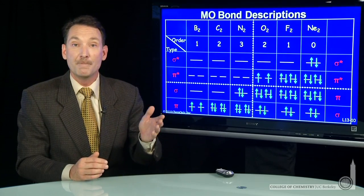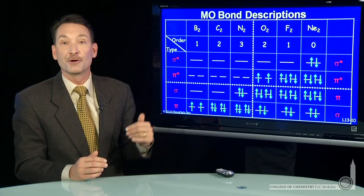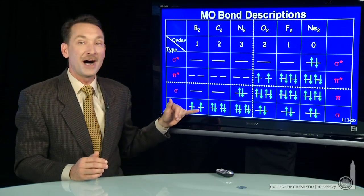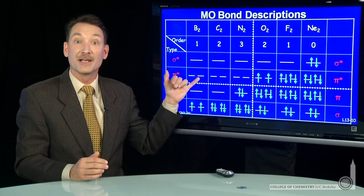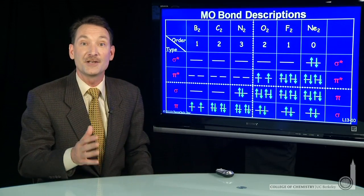And we would predict boron, B2 the molecule, would have a bond order of 1. Two bonding electrons, no antibonding electrons. So 2 divided by 2 is 1.